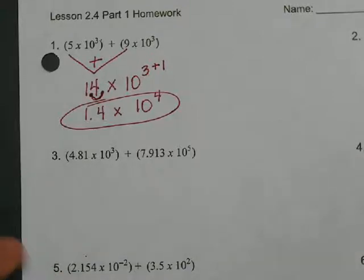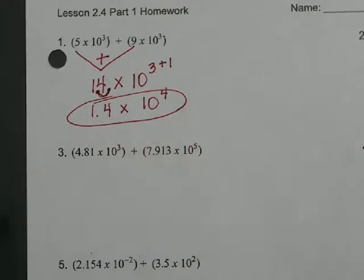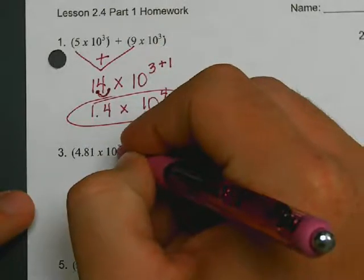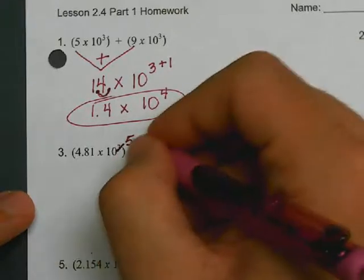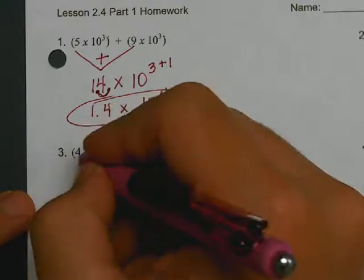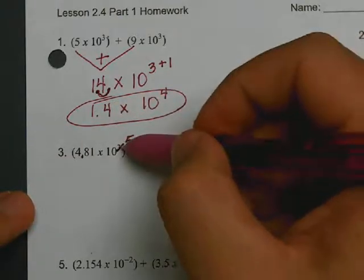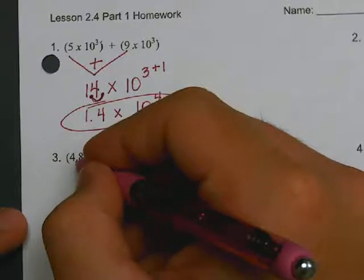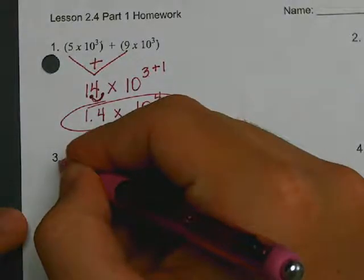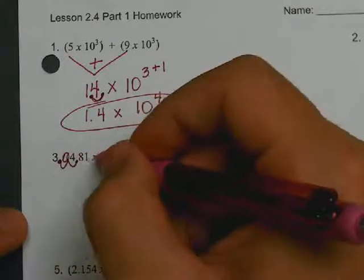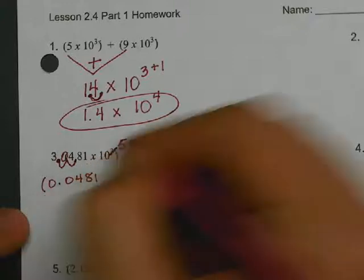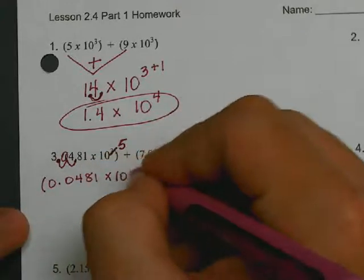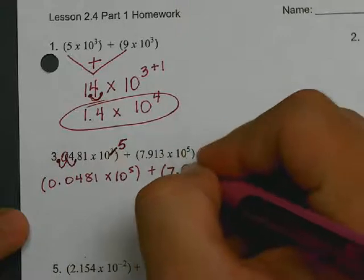You make the exponents the same, but I'm always going to try to encourage the increase because it just seems easier to me. So I'm going to increase this 3 to a 5. And when I do that, I then have to move this decimal. Since I increase this number by 2, I have to move this decimal 2 times. 1, 2. Now I have .0481 times 10 to the fifth. So I rewrite my new problem. I got 0.0481 times 10 to the fifth plus the quantity of 7.913 times 10 to the fifth.